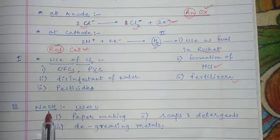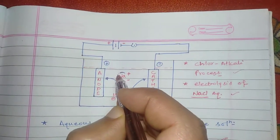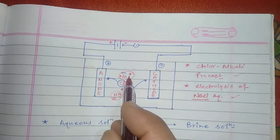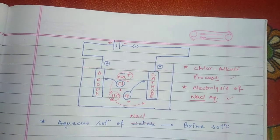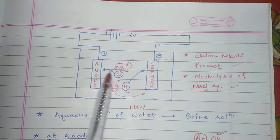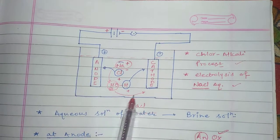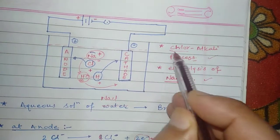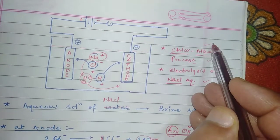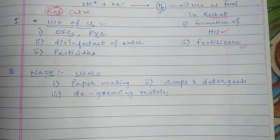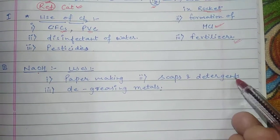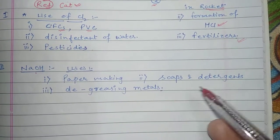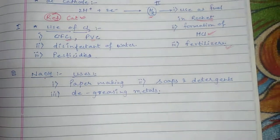NaOH is formed in this process when the remaining Na⁺ and OH⁻ ions combine and settle near the cathode. Since chlorine and NaOH — the alkali — are both formed, the process is called the chloroalkali process: 'chlor' for chlorine and 'alkali' for NaOH. NaOH is used in the formation of paper, soap, and detergent, and for degreasing metals by removing oils.